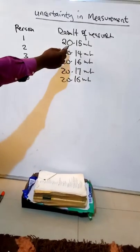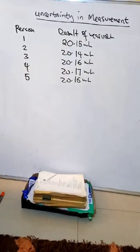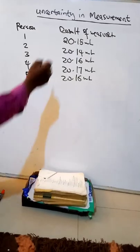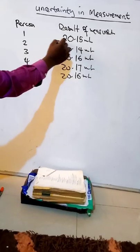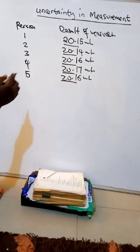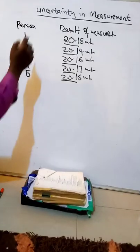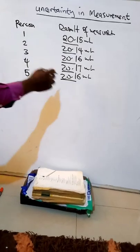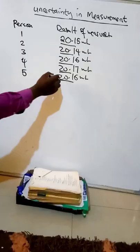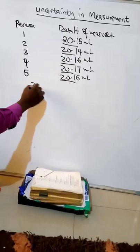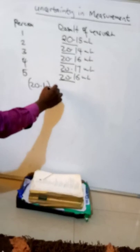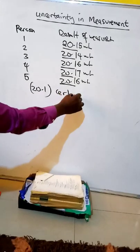When you analyze these results, you can see that the first three numbers — 20.1 in this case — remain the same regardless of who makes the reading. So the number 20.1 is called certain digits.